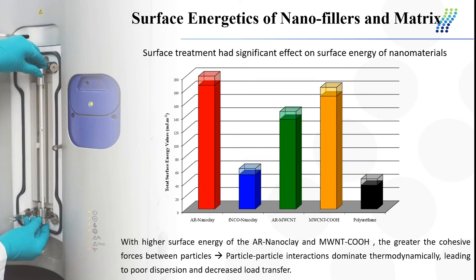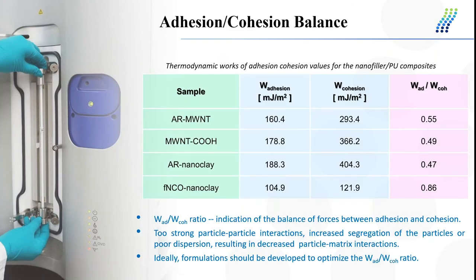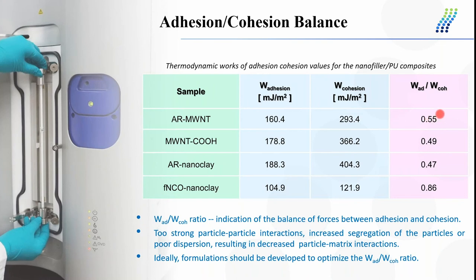With higher surface energy of the oxidized carbon nanotube and the as-received nanoclay, there are greater cohesive forces between particles — very strong particle-particle interactions — which leads to poor dispersion. Once we have the surface energy components of the individual materials, you can calculate the cohesion and adhesion between polyurethane and each filler. The cohesive energy and adhesion energy ratio is also determined. Ideally, a higher ratio — or closer to one — is better, and means good adhesion and good composite performance.